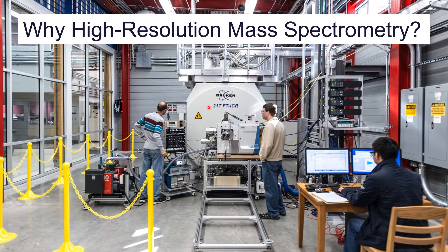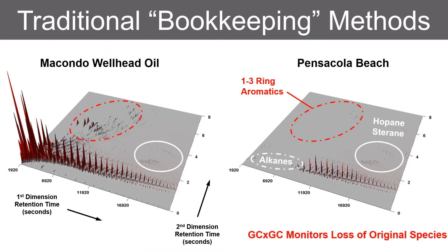The first simple question is: why high resolution mass spectrometry? First and foremost, GC-based traditional methods rely on a bookkeeping technique where the parent crude oil is analyzed at the isomeric level most of the time.